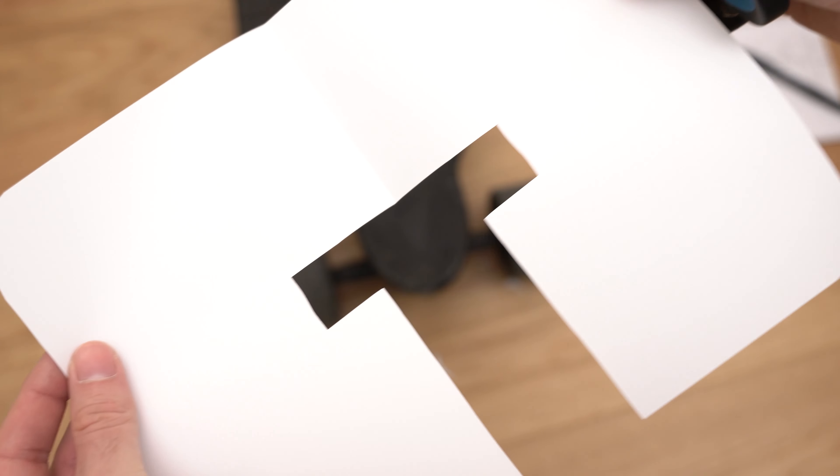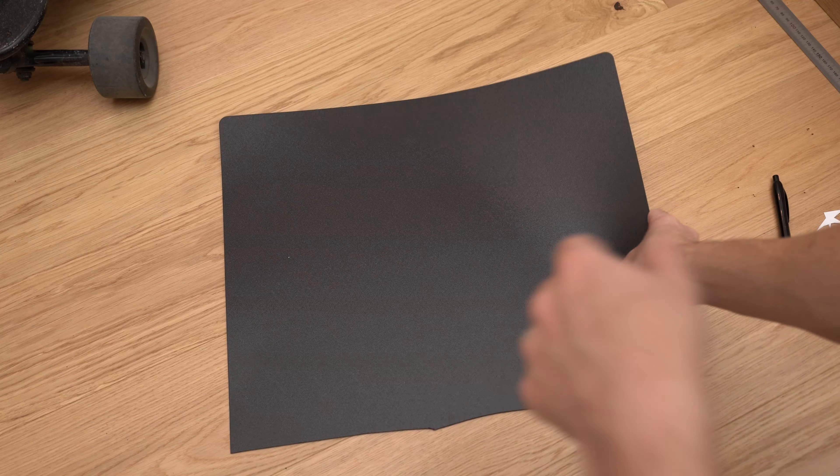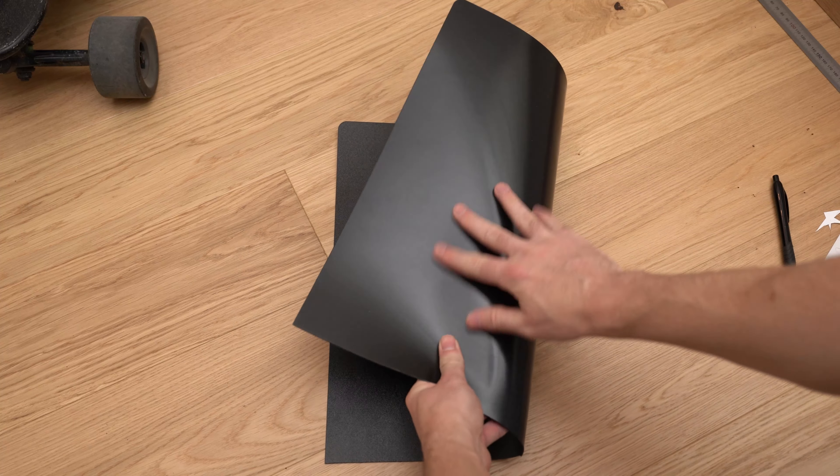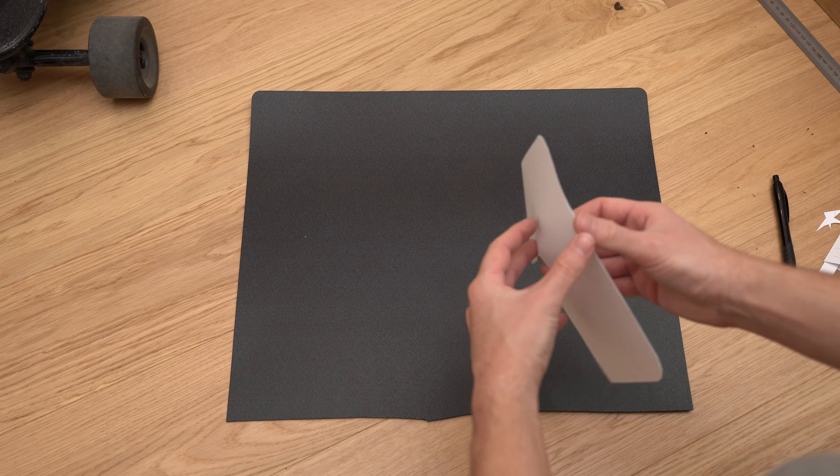Once you're happy with your design, it's time to cut out the mudguard for real. I found this desk mat in IKEA made from EVA that works perfectly, but any similar plastic material that isn't too flimsy should work.